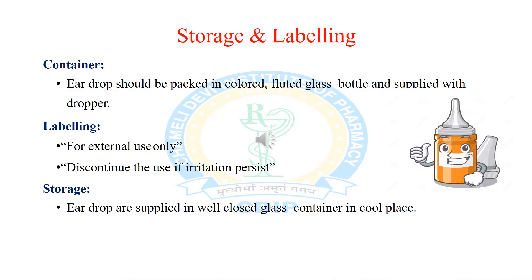For container, storage, and labeling of ear drops: ear drops are dispensed in colored fluted glass bottles with a dropper in the cap, and also in suitable plastic containers. The label should state 'for external use only' and 'discontinue use if irritation persists.' Ear drops are supplied in well-closed containers stored in a cool place.